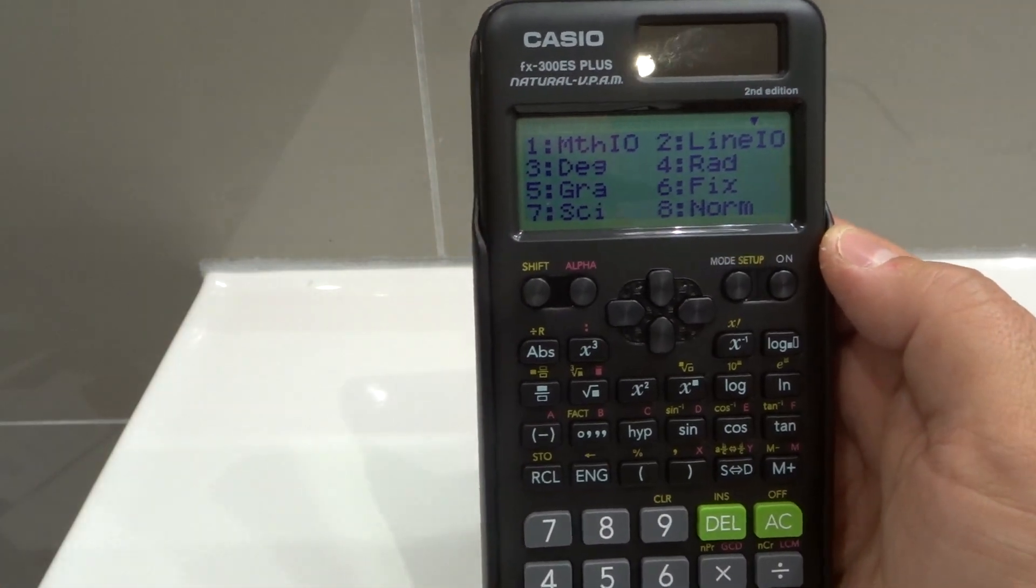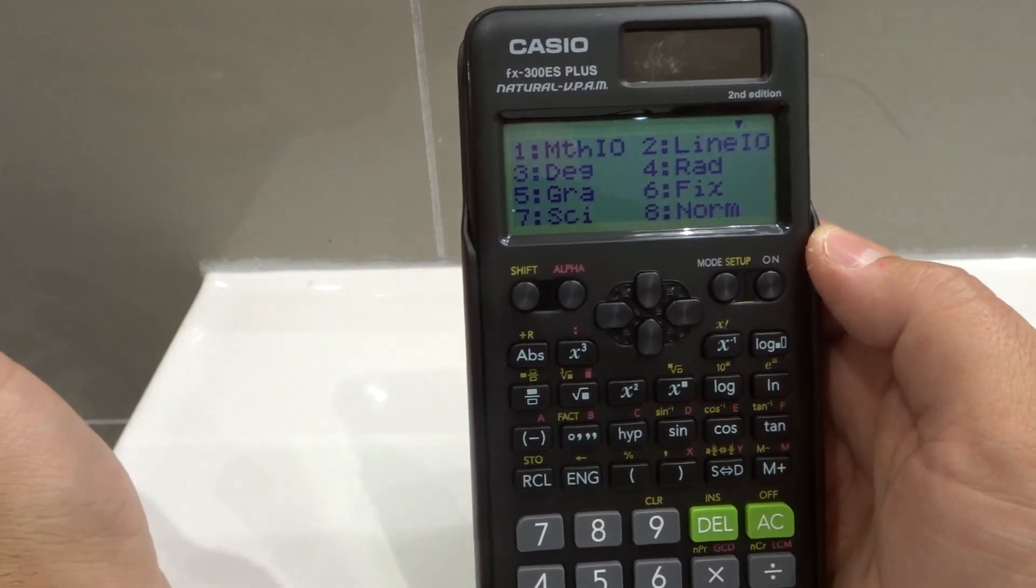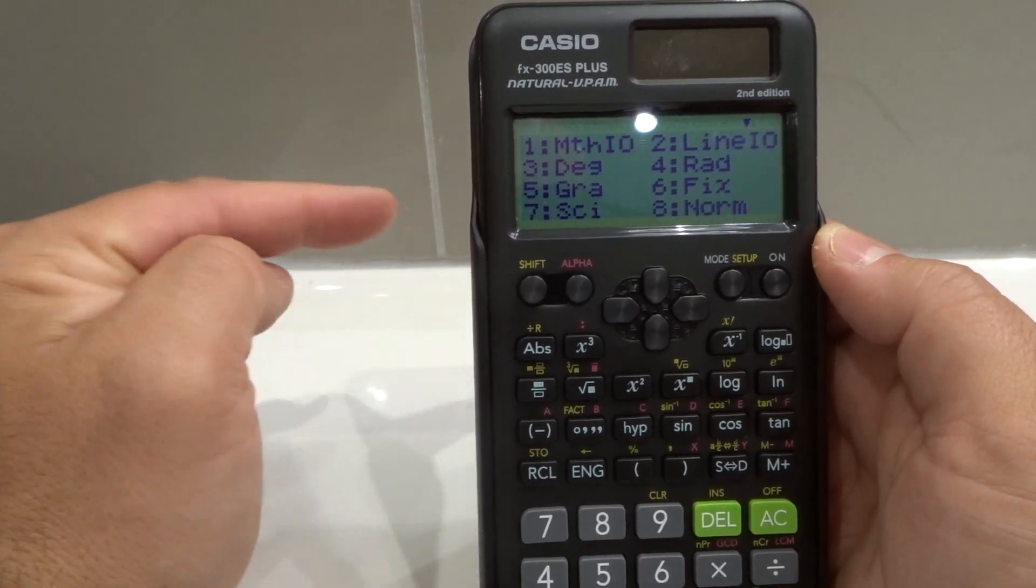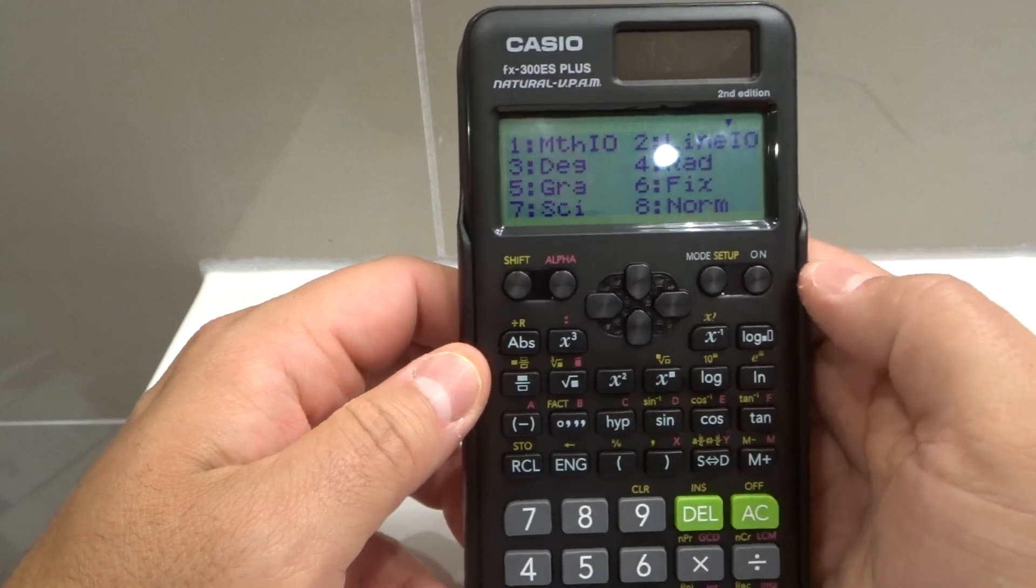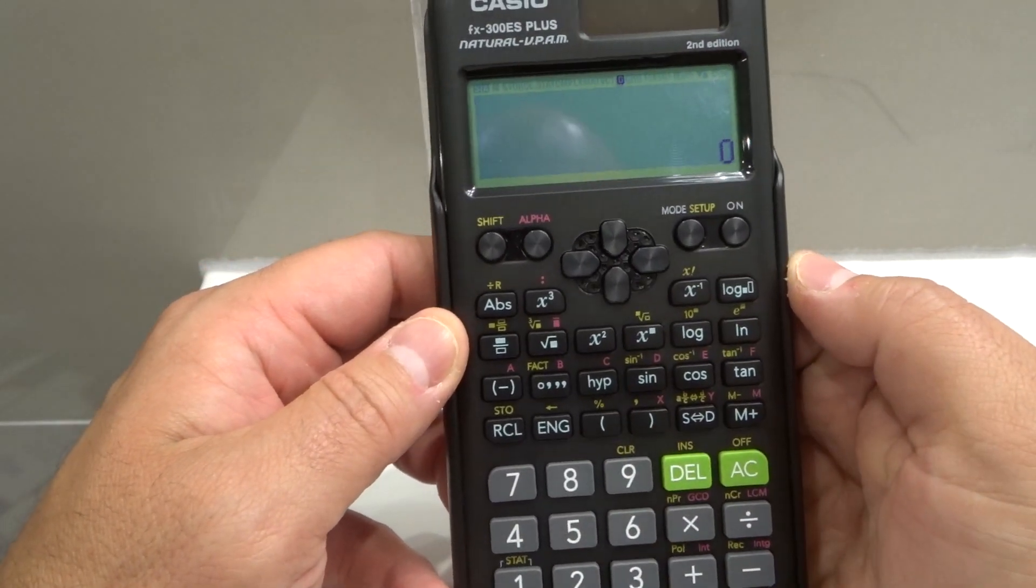What you want to do is the line input output, line IO. Math input output is number one, and that's what you will find in a math textbook. Number two is the line input output, and it just puts everything on one line. So you want number two, line input output. I'm going to push two right here, and now we're on line input output.